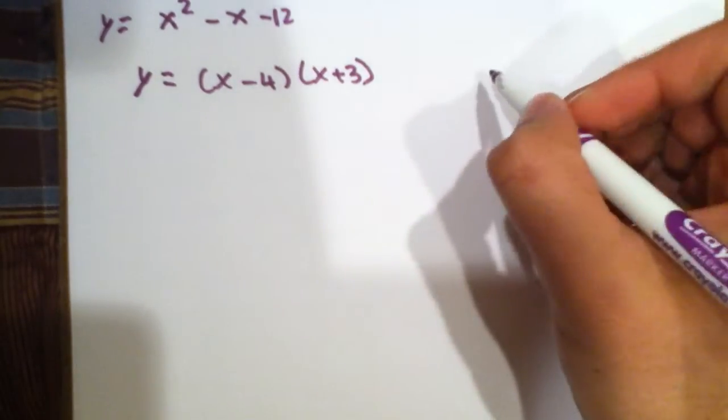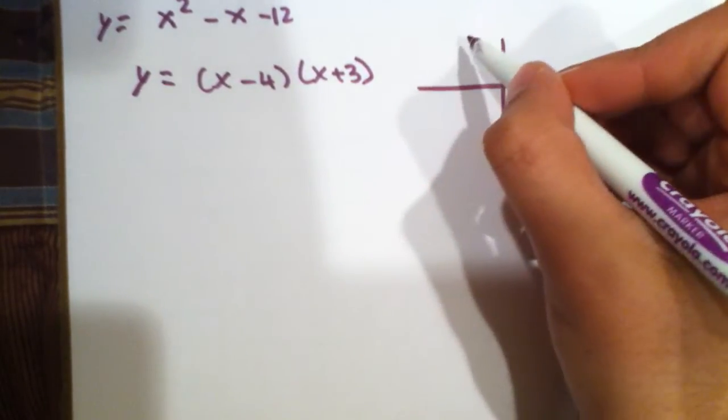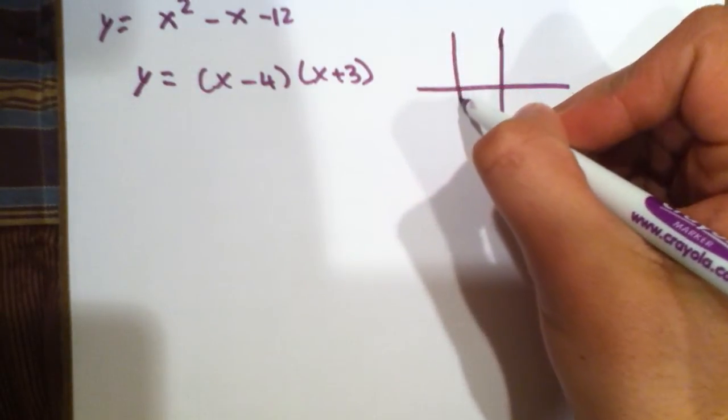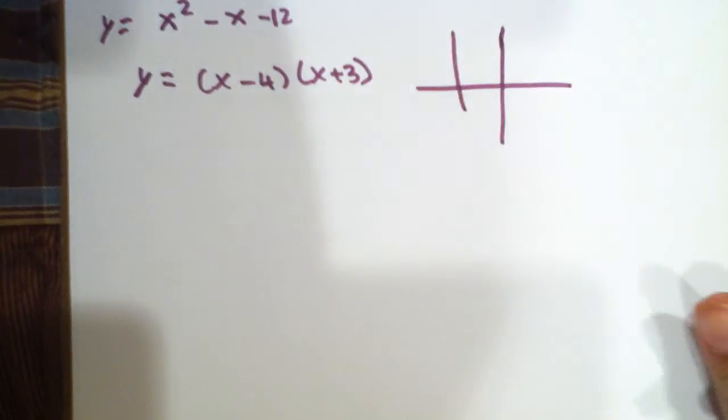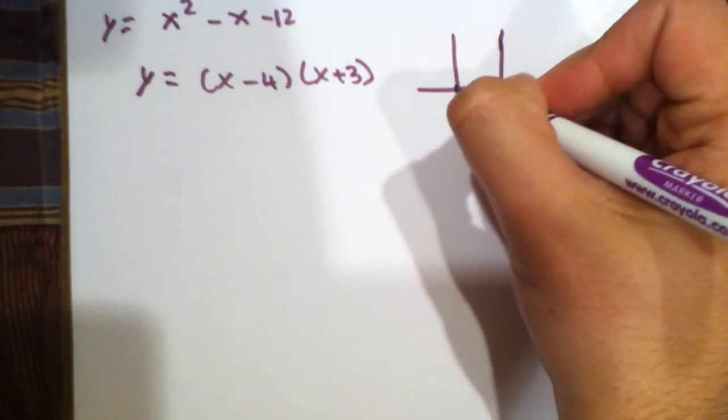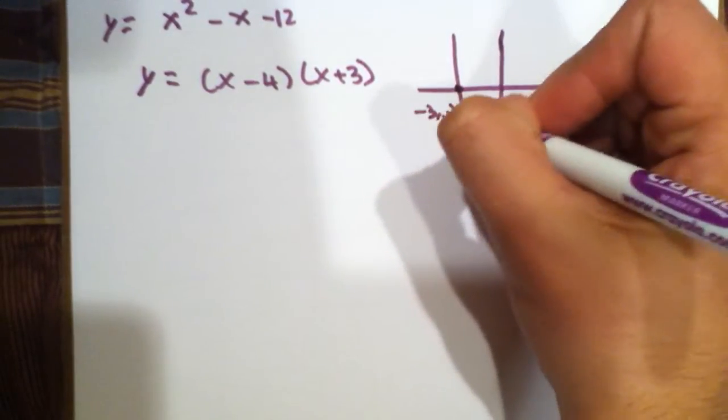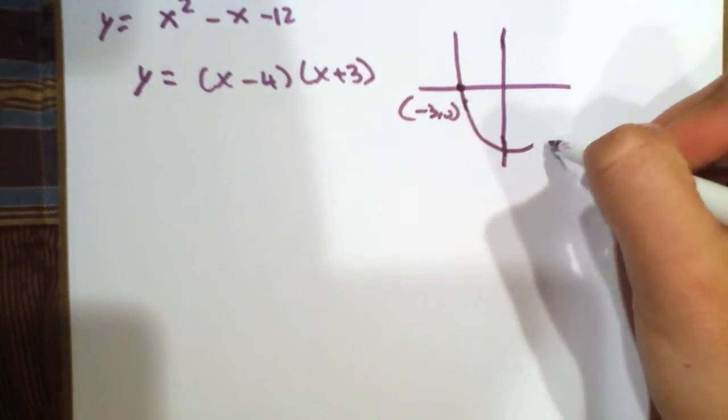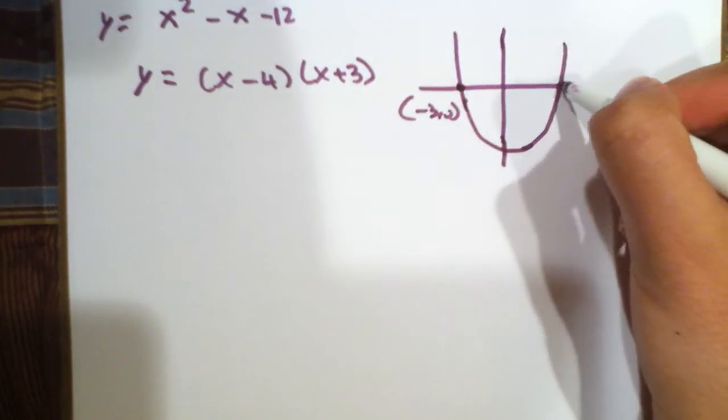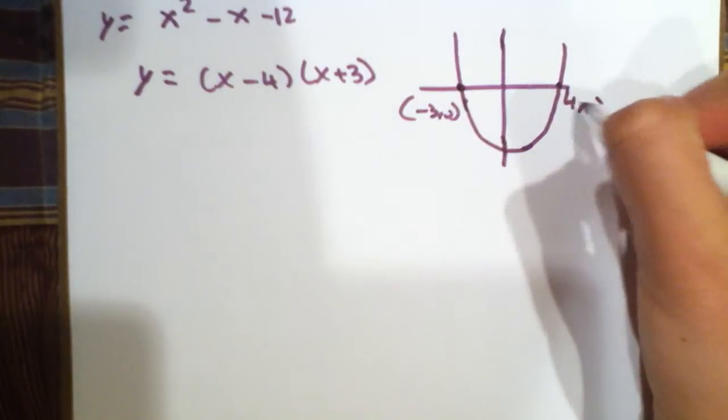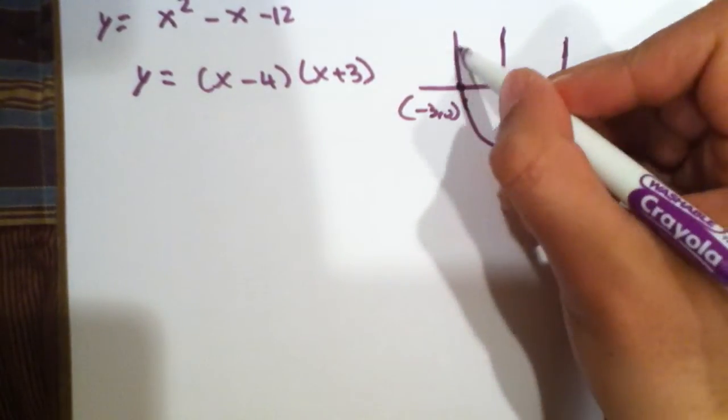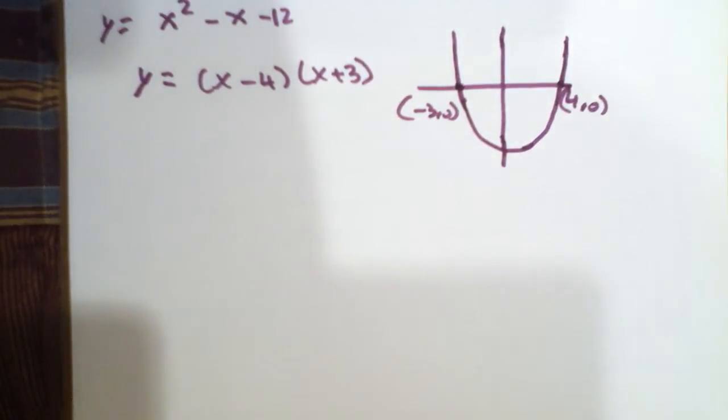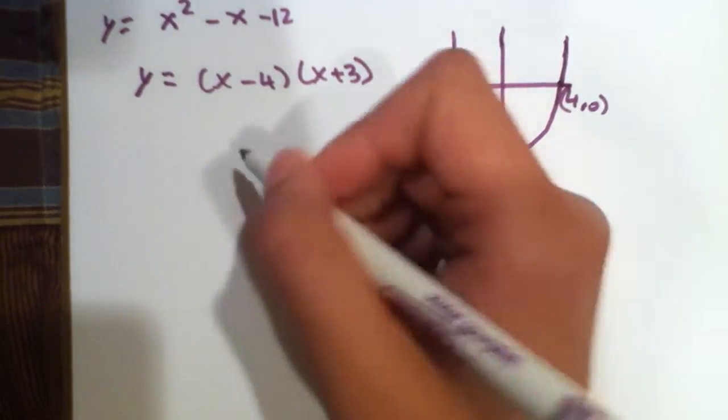So actually, if we graphed this, it would look something like this. It would go through here at negative 3 comma 0, go down here somewhere, come back up at 4 comma 0, and that would be the graph. And it will actually go through the x-axis. Now, here, we should talk about multiplicity.